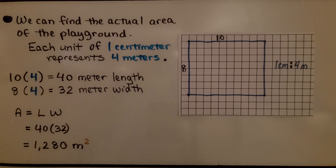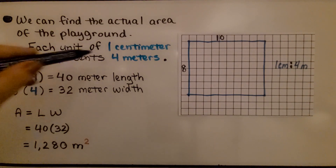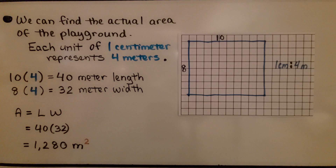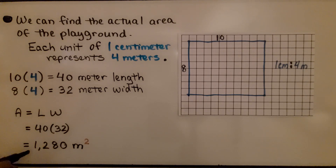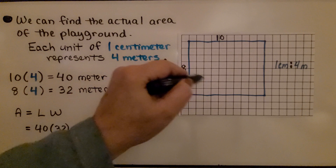We can find the actual area of the playground. Each unit of one centimeter represents four meters. We have ten units: ten times four gives a forty-meter length. We have eight for our width: eight times four gives a thirty-two-meter width. Area equals length times width: forty times thirty-two equals one thousand two hundred eighty square meters. Remember the squared exponent for meters because area is in square units.